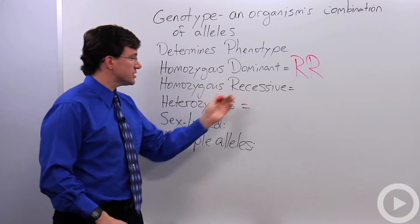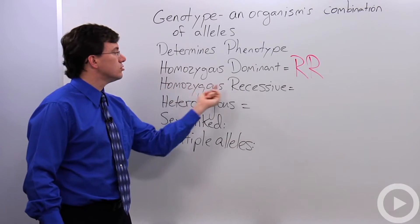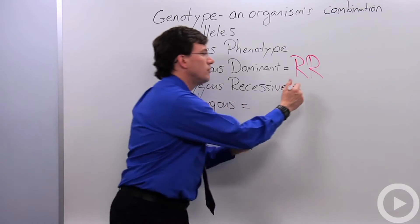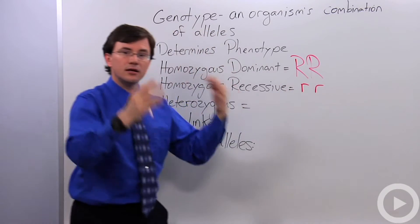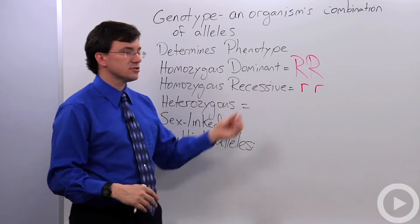Somebody's homozygous recessive, again, homo means the same. So two of the same recessives, a non-roller would be little r, little r. Their genotype would be homozygous recessive.